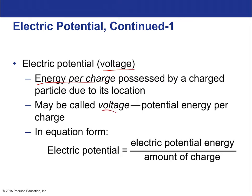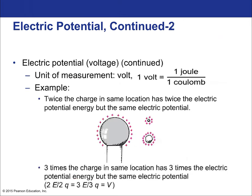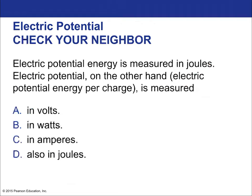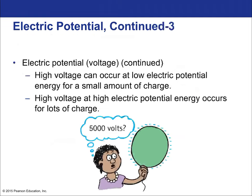Electrical potential and voltage are synonyms. The unit of electrical potential is the volt—one joule per coulomb. Twice the charge in the same location has twice the electrical potential energy but the same electrical potential, because potential is independent of the amount of charge. Electrical potential energy is measured in joules; electrical potential is measured in volts. High voltage can occur at low electrical energy for a small amount of charge.